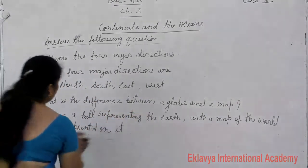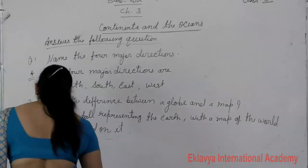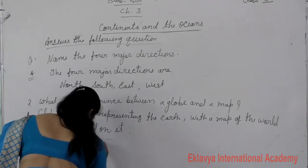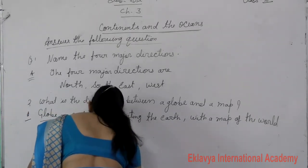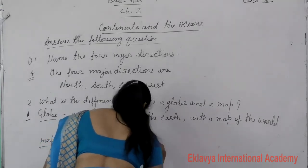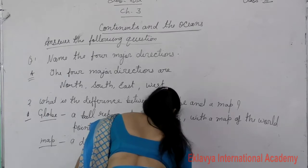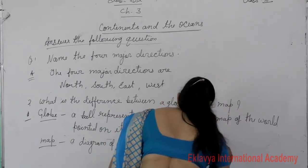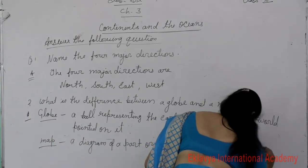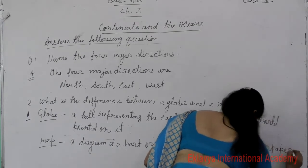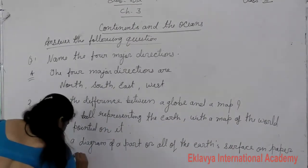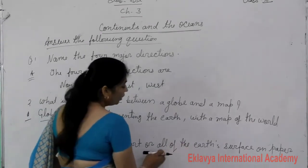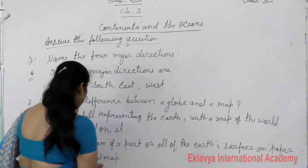Next is a map. A map is a diagram of a part or all of the earth's surface on paper. A diagram of a part of or all of the earth's surface on paper is called a map.